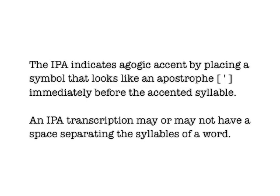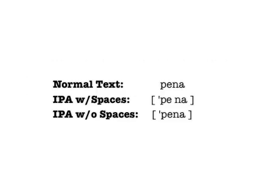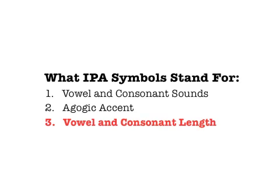The IPA shows agogic accent by putting what looks like an apostrophe before the accented syllable. Sometimes the syllables will be separated by a space in the IPA transcription, but other times the person who wrote the transcription just expects you to know where the syllable breaks are. Here are the transcriptions for the Italian word 'beina' — one with spaces, one without. Notice that the stress is on the first syllable because of the apostrophe before it. Finally, the IPA can indicate how long you should hold a vowel or consonant sound. This concept can be a little strange for English speakers, since vowel and consonant length aren't very prominent features of our language, but it can be really important in other languages.